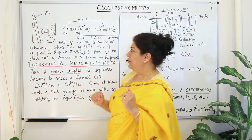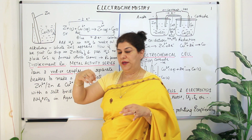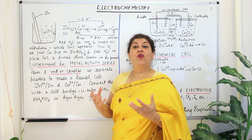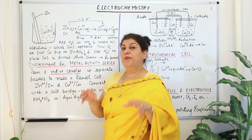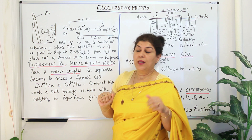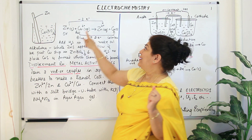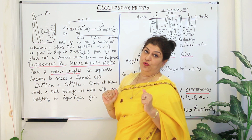Let us study one such reaction. If you take a solution of copper nitrate and you dip a zinc rod into it, what do you notice? Zinc is more reactive than copper, or it has a stronger tendency to get oxidized, which means it has a stronger tendency to lose electrons in comparison to copper. So zinc forces its electrons onto copper, itself acquires the Zn2+ state, and pushes copper out of the solution.